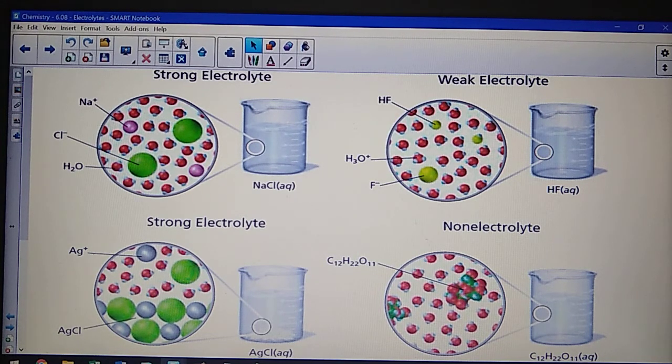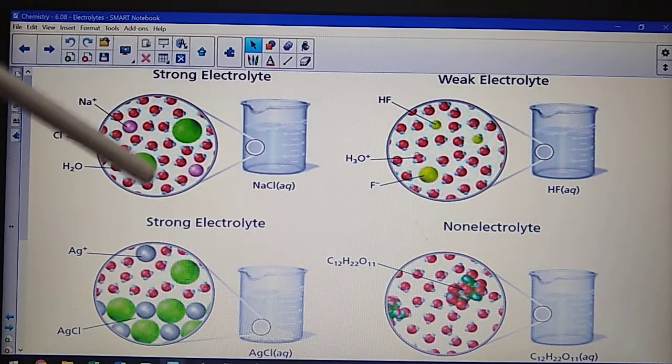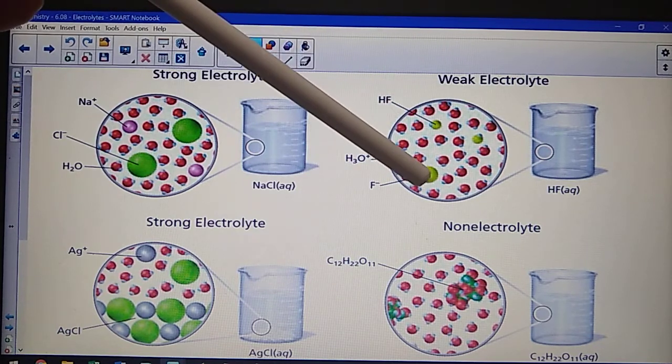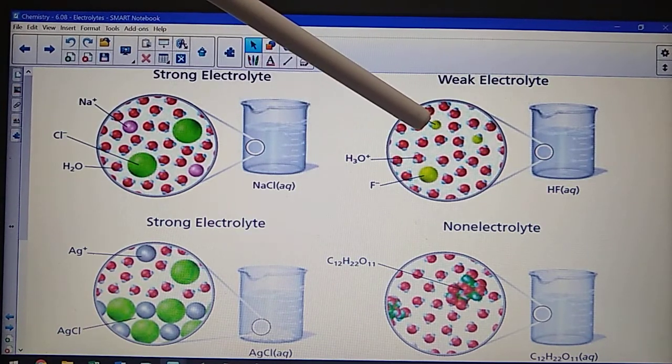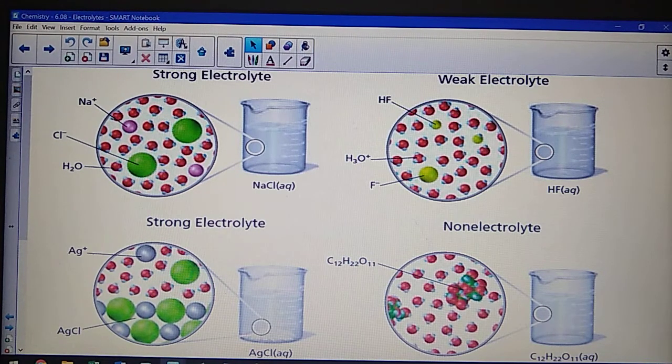So strong electrolytes could be something like sodium chloride. Every bit of sodium chloride that gets dissolved is broken up into sodium and chloride ions. Hydrofluoric acid, on the other hand, is a weak electrolyte. If I look at the sodium chloride, every single ion of sodium and chlorine has been separated. With hydrofluoric acid, some of them have been separated, but there are still a few molecules left together. So it produces some ions, but not all ions, and it's considered a weak electrolyte.